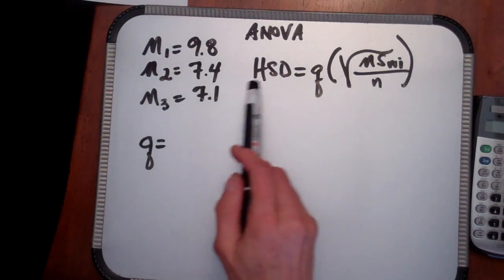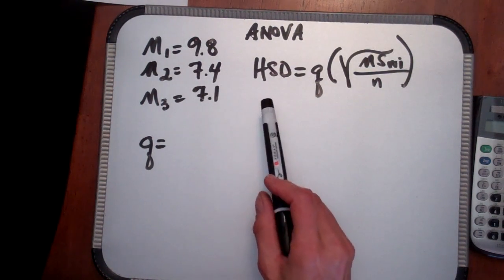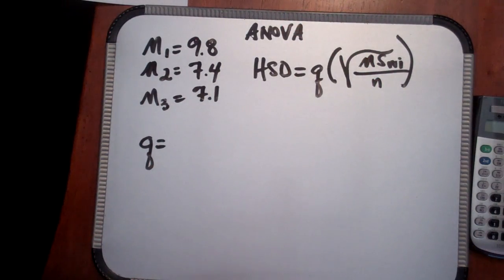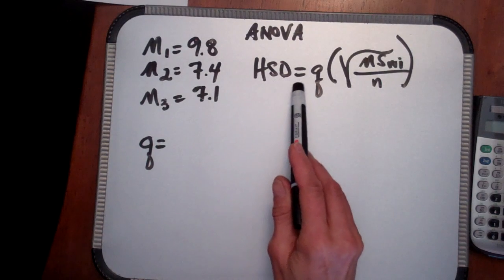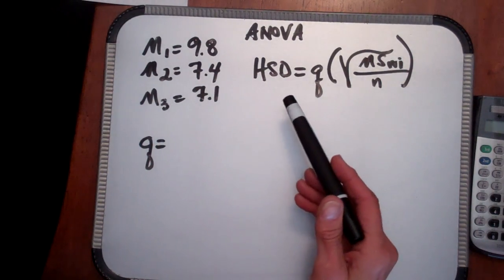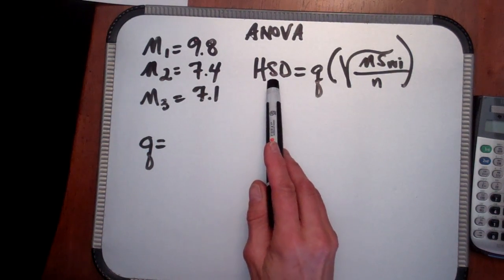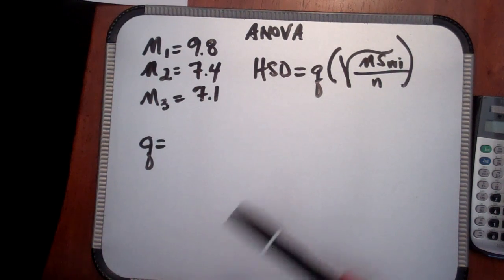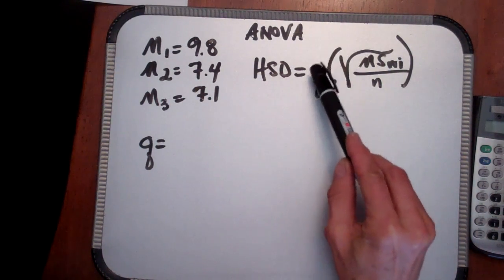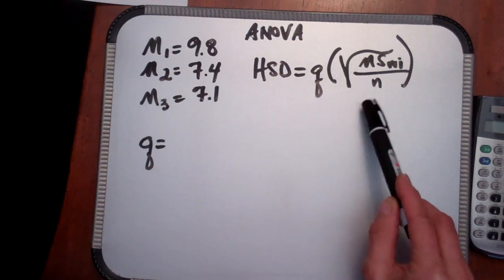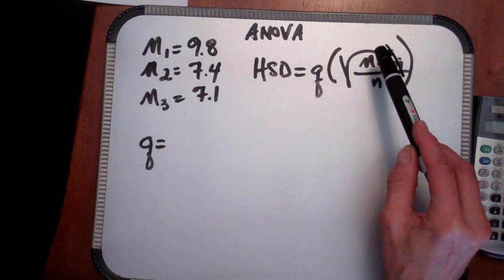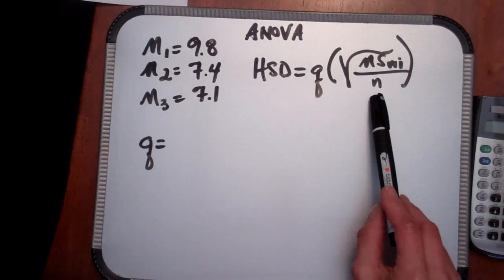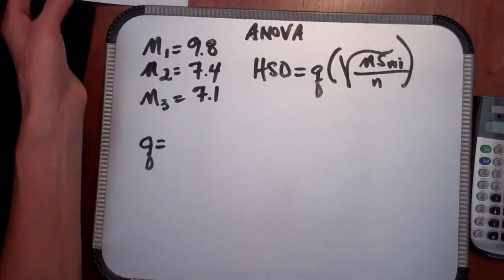Now to be able to determine which of your groups have difference significantly, you need to get what's referred to as the HSD number or the honestly significant difference for your groups. And you calculate it with a Q-statistic, and you take Q times the square root of the mean square within divided by the group size, not the overall sample size.